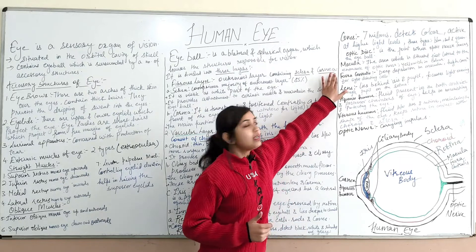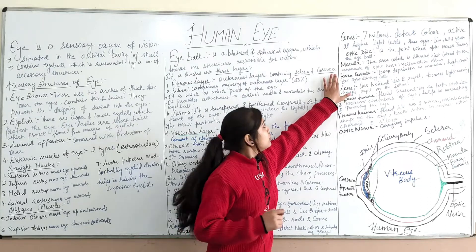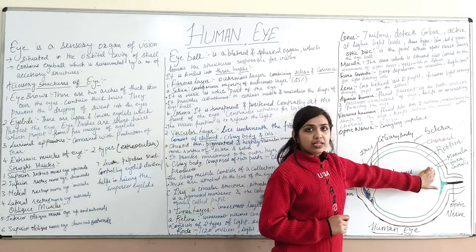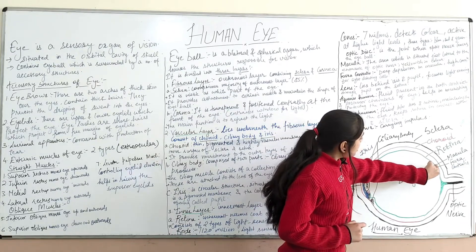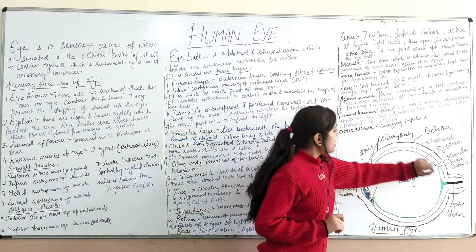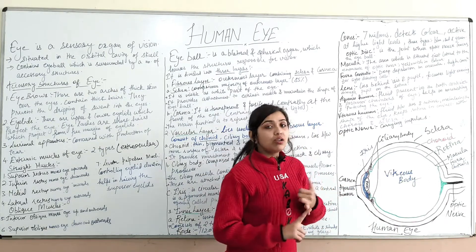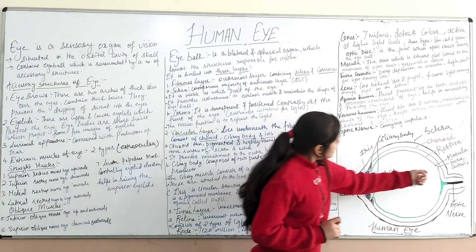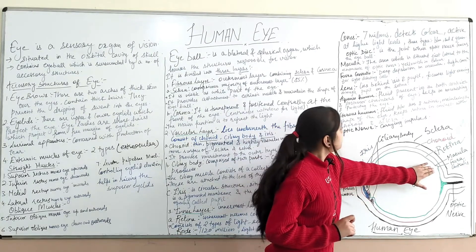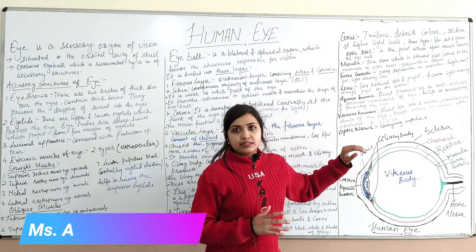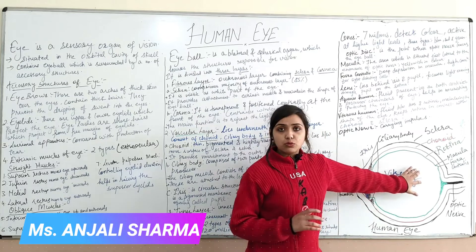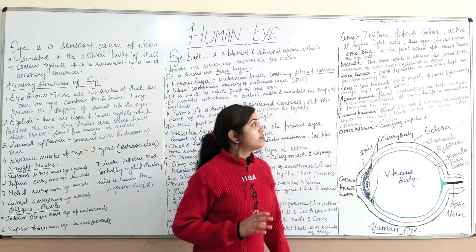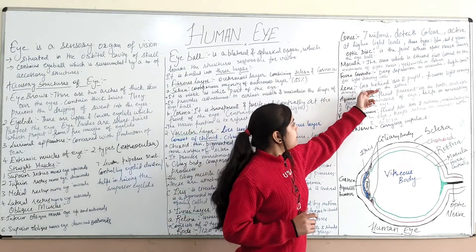The optic disc is the region where the optic nerve leaves the eyeball. On the retina, there are two important structures: the macula and the fovea centralis. The macula is a yellowish area situated just lateral to the entrance of the optic nerve. The fovea centralis is a deep depression within the macula that is concentrated with light-detecting cells, making it the region of highest visual acuity.